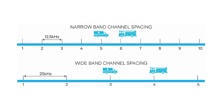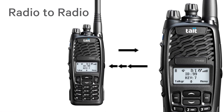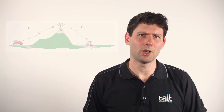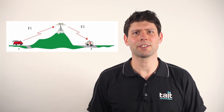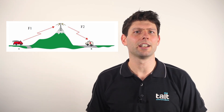One topic that often causes confusion in digital radio networks is the difference between physical and logical channels. A physical radio channel is a radio frequency or pair of frequencies allocated by the regulatory body to an agency for communication. In simplex, direct radio-to-radio communication, the same frequency may be used for reception and transmission. Where repeaters are used, a pair of frequencies make up the radio channel — one for transmitting into the repeater and another for receiving from it. This pair of frequencies is still one radio channel.